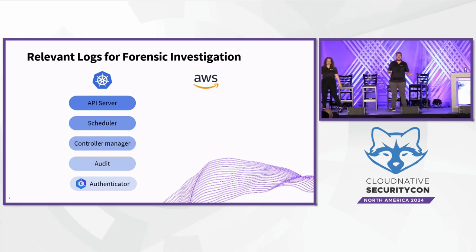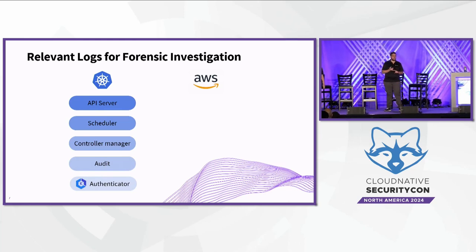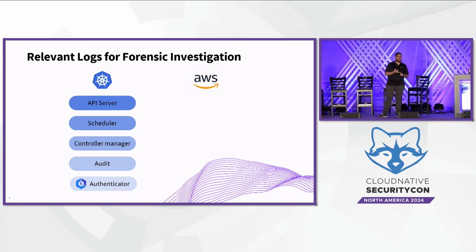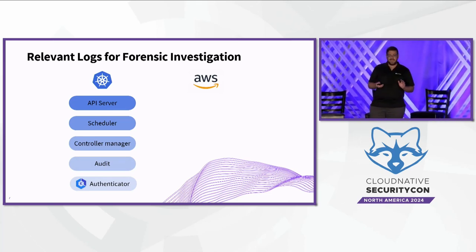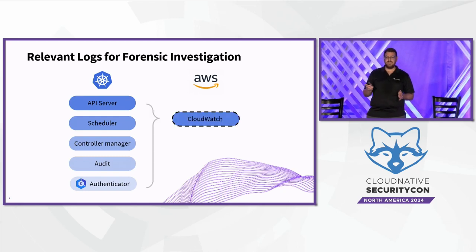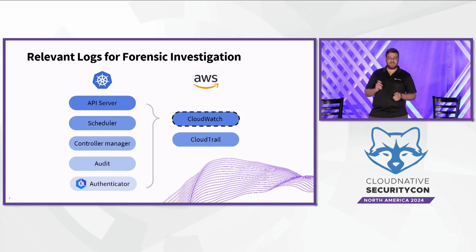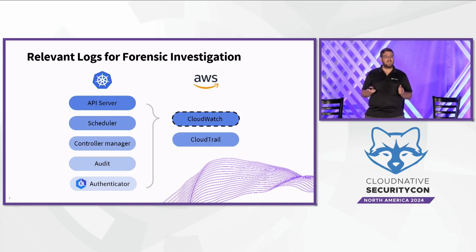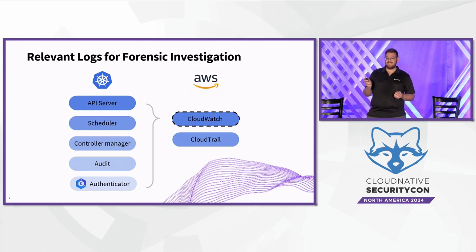Now to the cloud provider side. Each cloud provider has its own implementation of three relevant concepts: collecting Kubernetes logs, auditing management actions, and detecting malicious activity. The simple way to collect and analyze Kubernetes logs when using EKS is CloudWatch, the AWS monitoring service. The AWS audit log is called CloudTrail, which contains records about actions made by various types of entities. The AWS threat detection service is called GuardDuty.